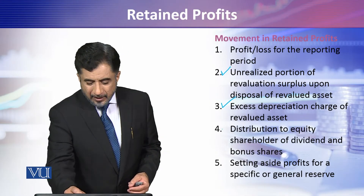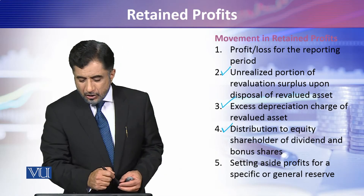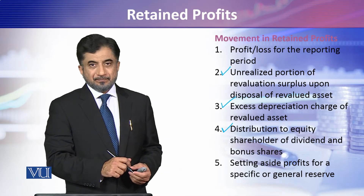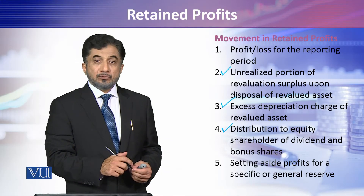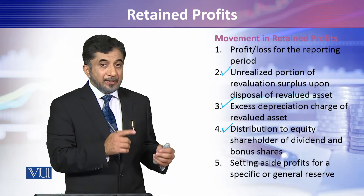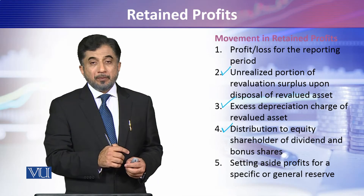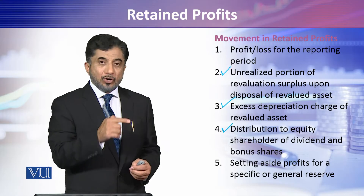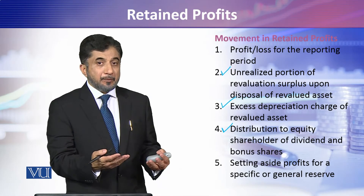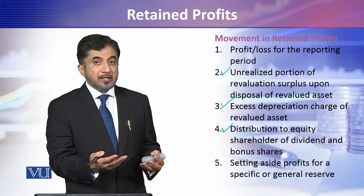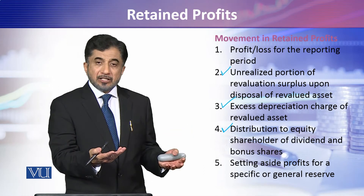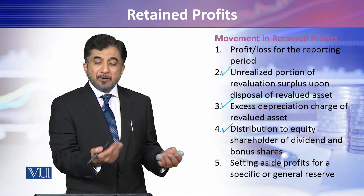Another movement is the distribution to equity shareholders in terms of dividend. The dividend paid from retained profits is debited to retained profits — i.e., deducted from retained profits — and dividend payable is created, which is then paid out in cash.